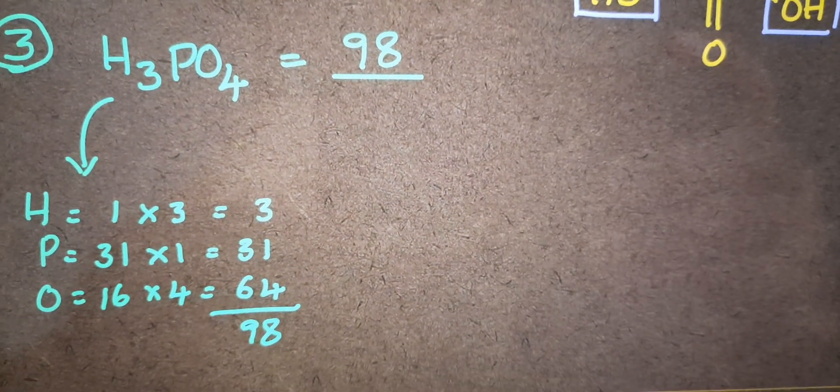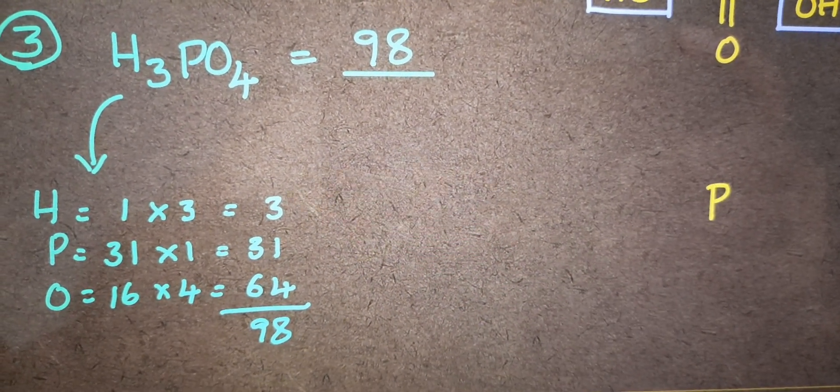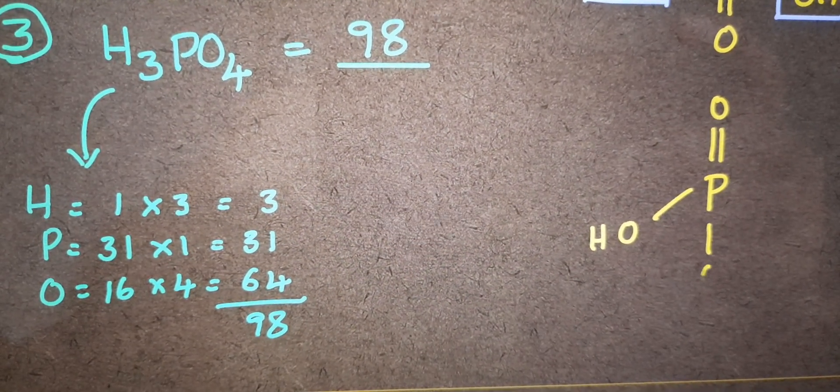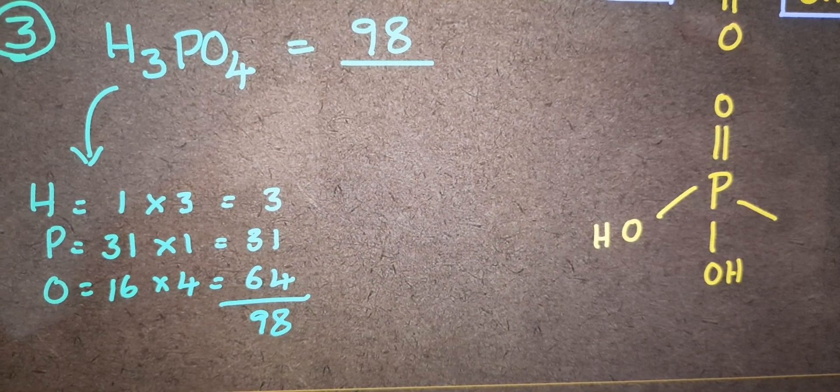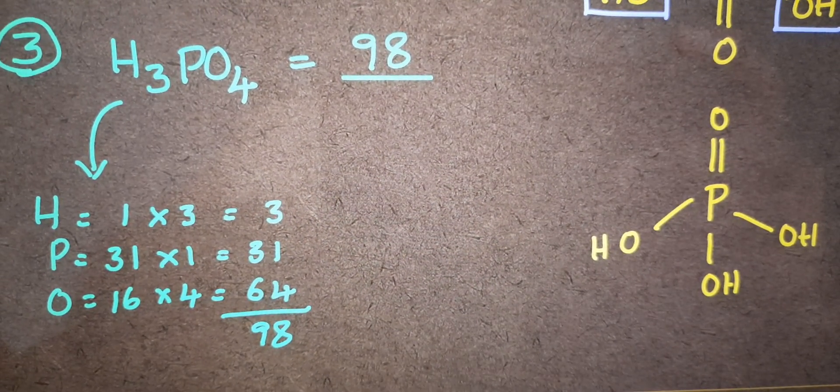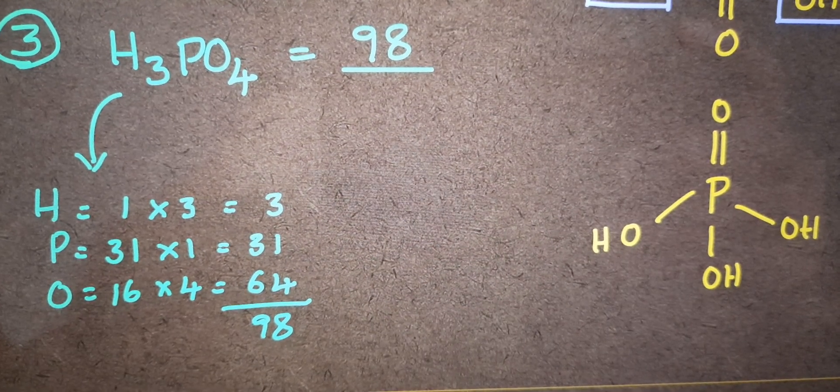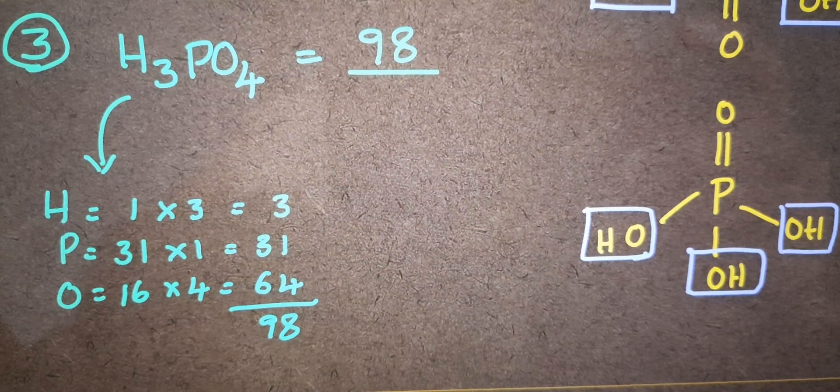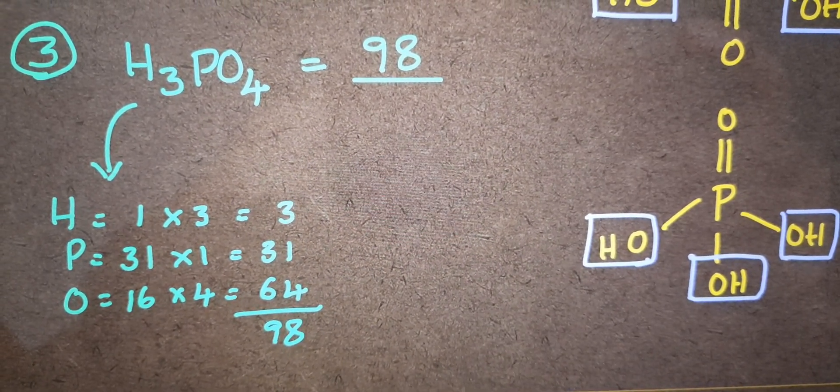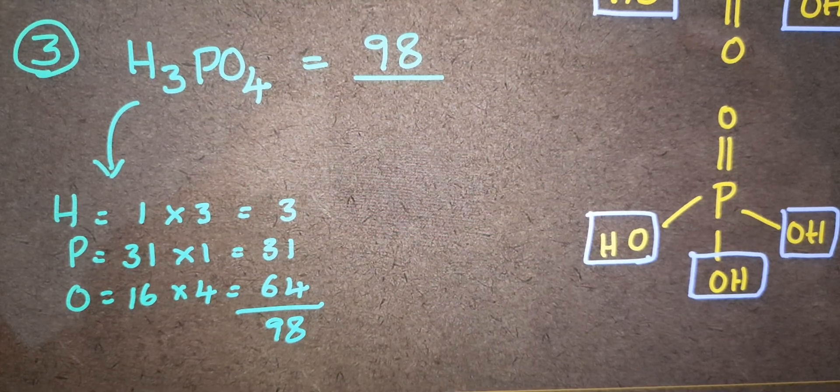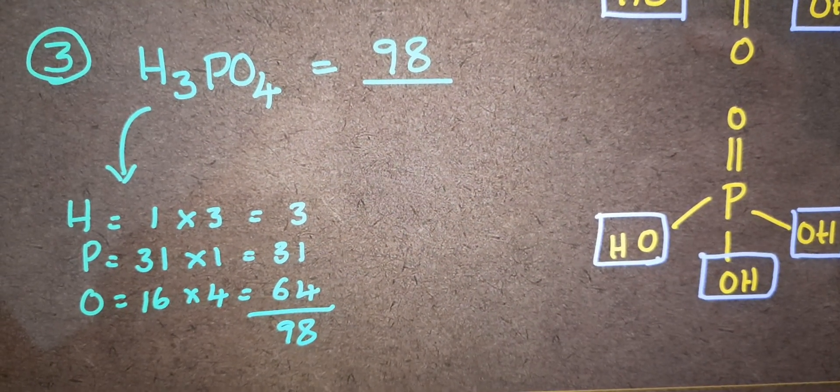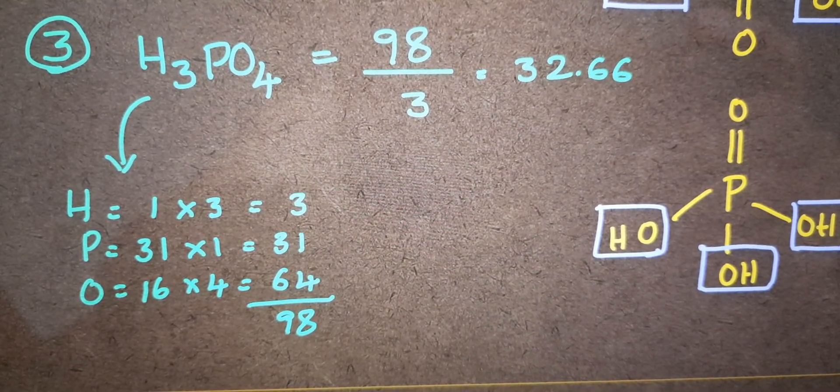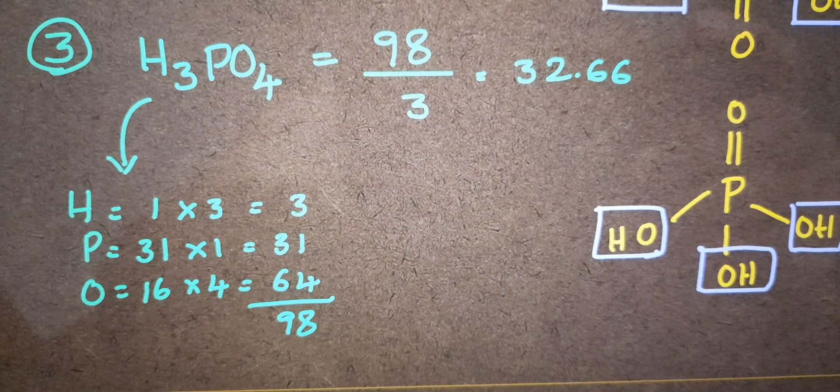For this student must know the structure. So P double bond O, OH, OH, and OH. So 98 by number of displaceable hydrogens here are: this is 1, this is 2, and this is 3, so by 3. So answer will be 32.66. This is the way to calculate equivalent weights of acids.